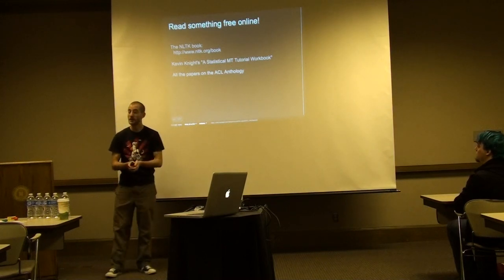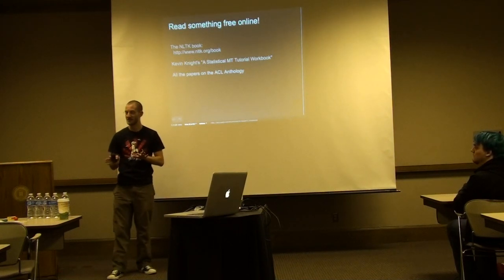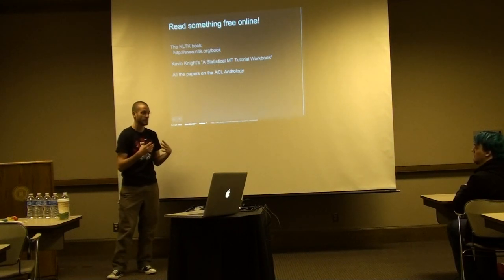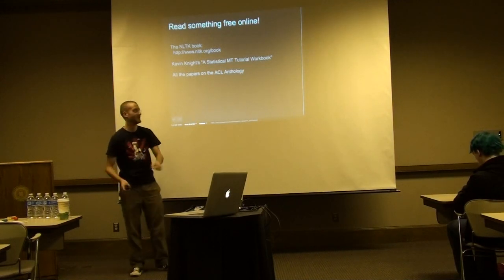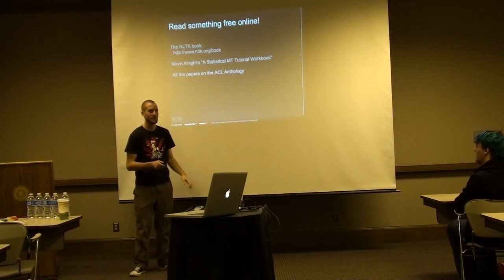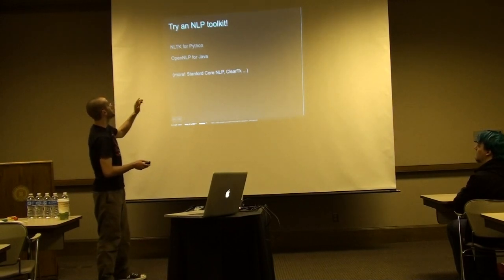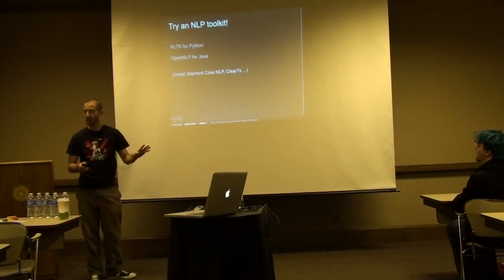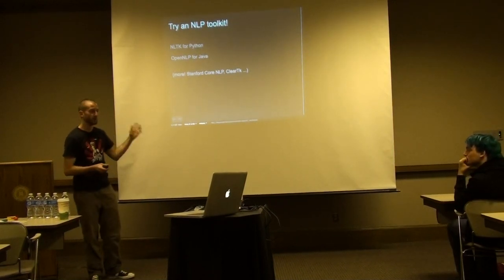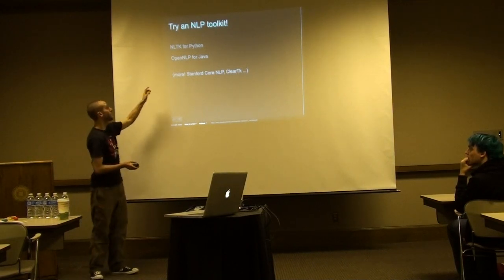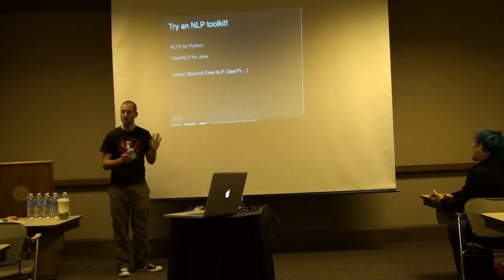If you want to learn more about translation, you can read a workbook by Kevin Knight — it's free and really good, and you'll learn about statistical MT. One of the most beautiful things about computational linguistics is basically everything in the field is open access — you can just read all the papers. If you like Python and want to play with NLP, get NLTK — it's free with lots of nice documentation. If you like Java, OpenNLP is nice, and Stanford also has a package.